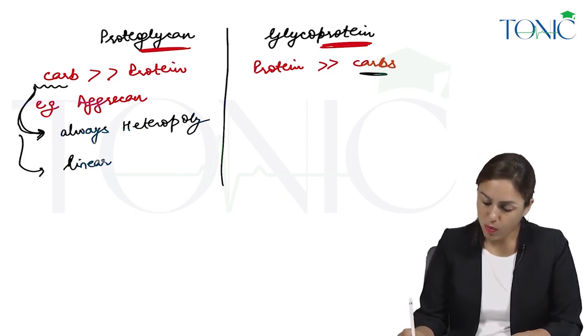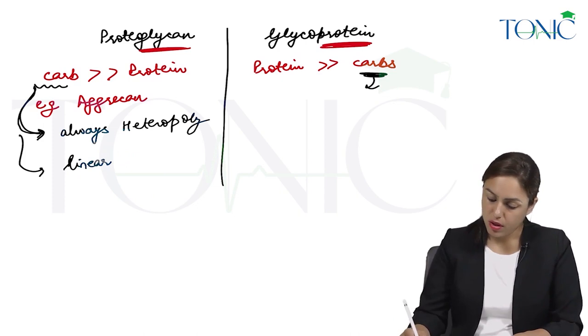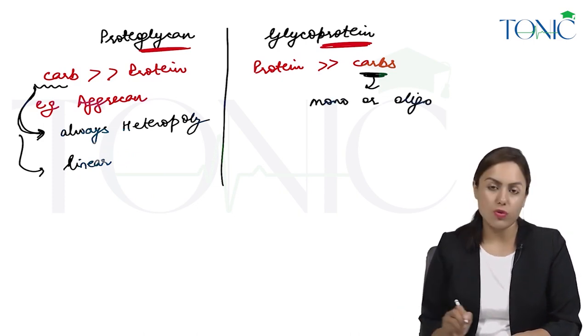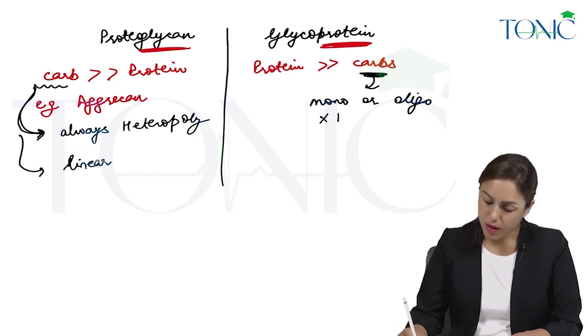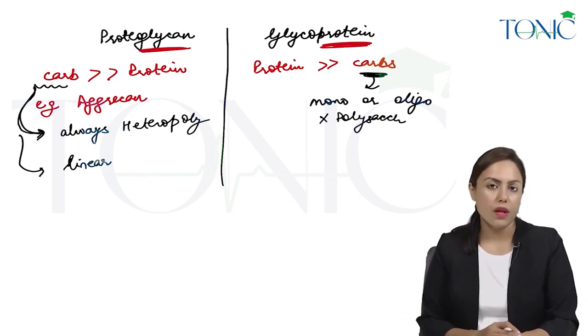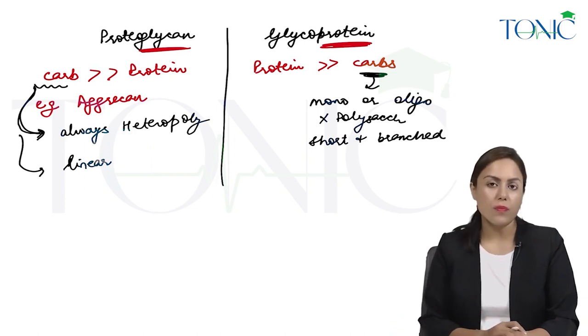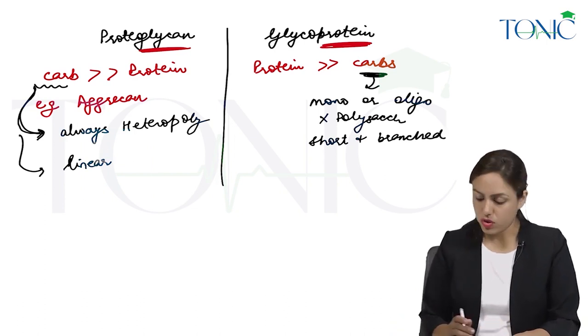But the carbohydrate of glycoprotein, this can be monosaccharide or oligosaccharide but never a polysaccharide, and this carbohydrate is short and branched.